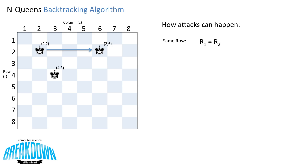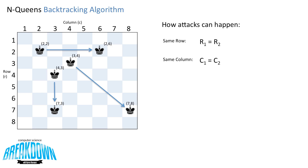Here's another example. If we have a Queen at 4,3 and another Queen at 7,3, they share the same column so they can attack each other. So if column for Queen 1 and column for Queen 2 are the same, then they are not safe. And here is another example. If we have a Queen at position 3,4 and another Queen at position 7,8, they share the same diagonal so they can attack each other. To calculate this, we take the absolute value of the row for Queen 1 minus the row for Queen 2, and check if it's equal to the absolute value of the column of Queen 1 minus the column of Queen 2.